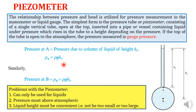Today we start with the simplest device called a piezometer. The relationship between pressure and head is utilized for pressure measurement in the manometer or liquid gauges. The simplest form is the pressure tube or piezometer, consisting of a single vertical tube open at the top, inserted into a pipe or vessel containing liquid under pressure, which rises in the tube to a height depending on the pressure. If the top of the tube is open to atmosphere, the pressure measured is gauge pressure.